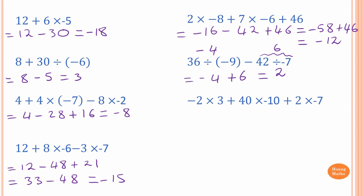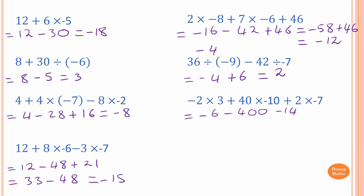Second last one: negative 2 times 3 plus 40 times negative 10 plus 2 times negative 7. Do multiplication first. Negative 2 times 3 is negative 6. Then 40 times negative 10 gives negative 400. Then negative 7 times 2 is negative 14. Rewriting: negative 6 minus 400 minus 14. You owe 14 plus 6 which is 20, plus 400 is 420, so the answer is negative 420.